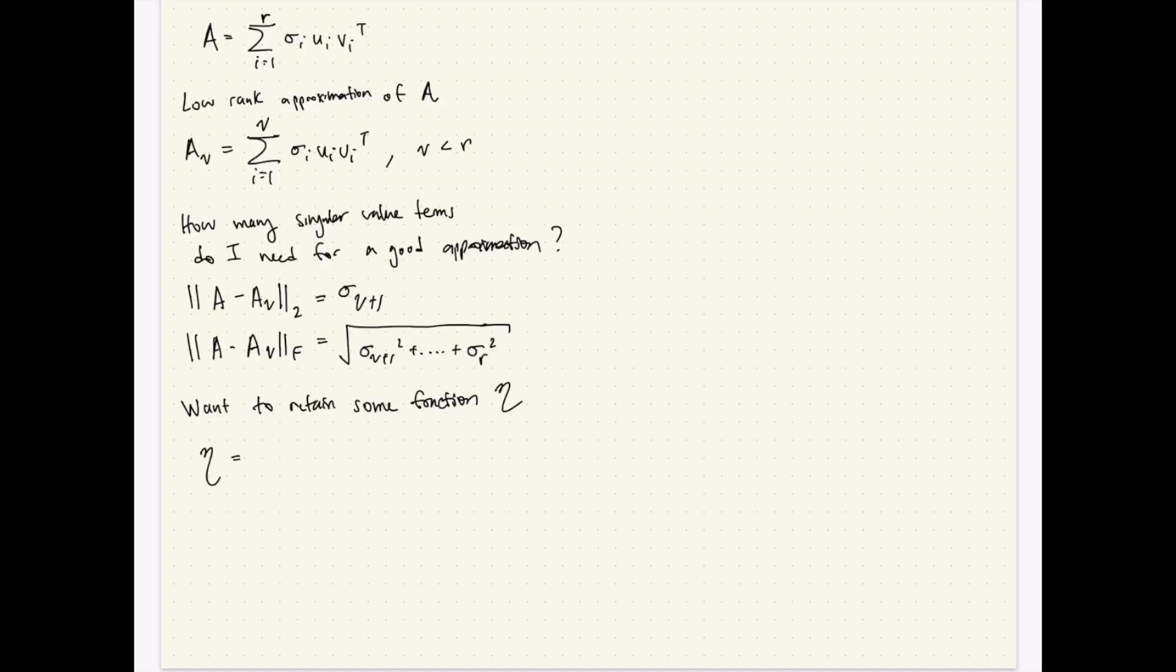So we could say eta is equal to the norm of A sub nu divided by just A, which using just the singular values gives us sigma 1 squared plus sigma 2 squared dot dot dot plus sigma nu squared